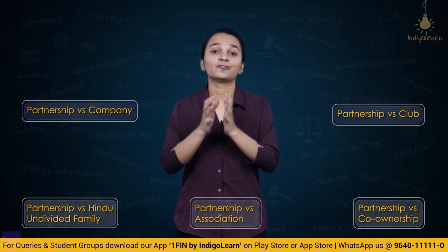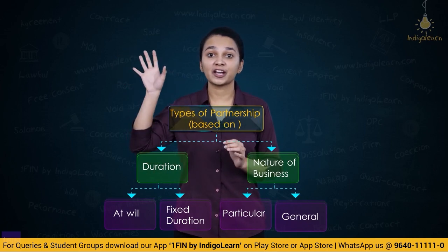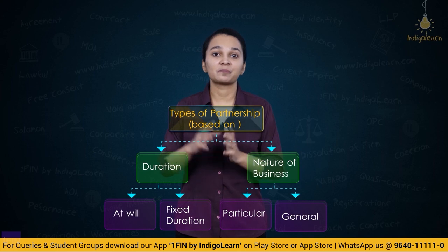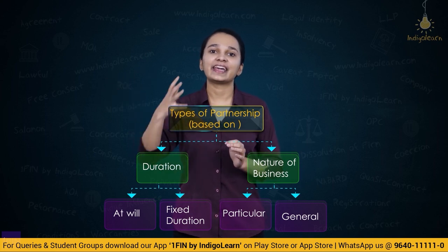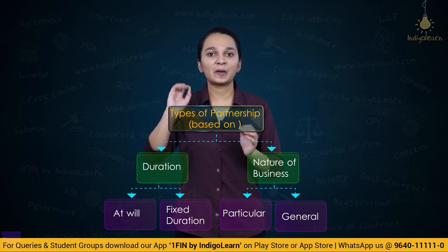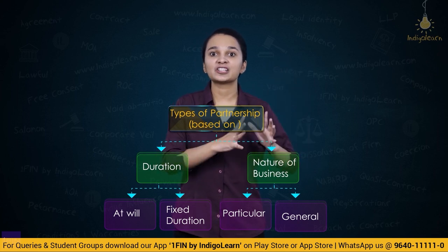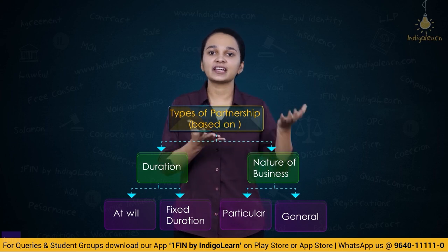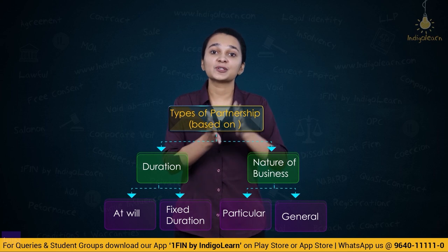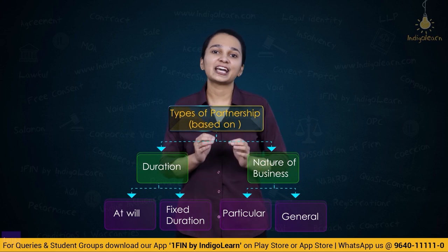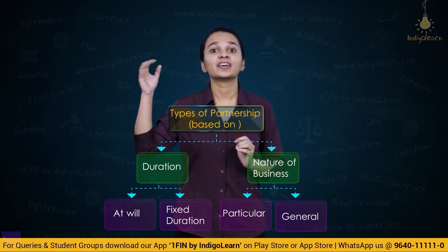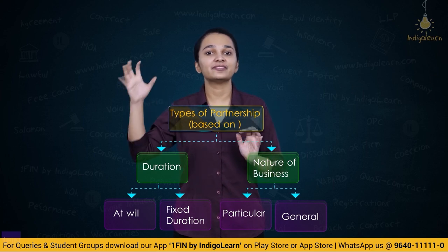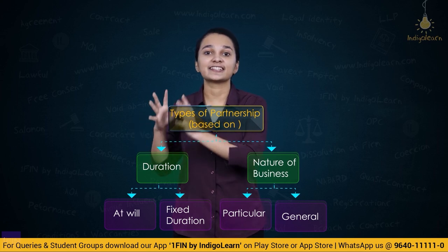We also understood different kinds of partnership. The first is partnership at will — there is no fixed period, no provisions for determination of partnership, and it can be dissolved at any time by any partner by giving a notice in writing to the other partners. Then there is partnership for a fixed period, which is started for a particular time span and must dissolve when the period expires. If it continues after the expiry of the fixed period, it becomes a partnership at will. A particular partnership is formed for a single business transaction or venture.